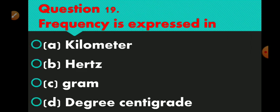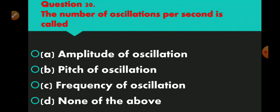Question number 19 is: frequency is expressed in — what is the unit of frequency? Option A kilometer, option B hertz, option C gram, option D degree centigrade. Right answer is option B — hertz. Question number 20: the number of oscillations per second is called. Option A amplitude of oscillation, option B pitch of oscillation, option C frequency of oscillation, option D none of the above. Answer is option C — frequency of oscillation.